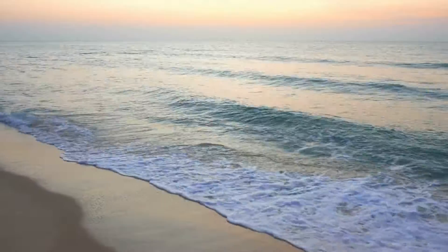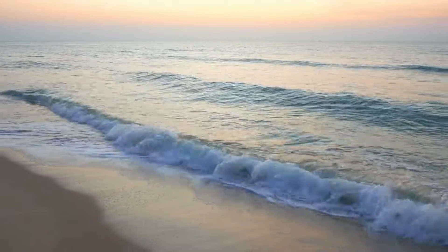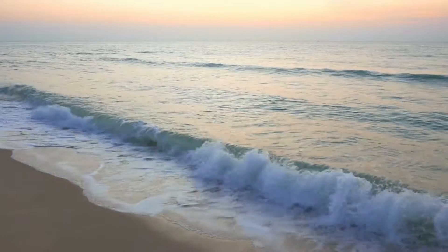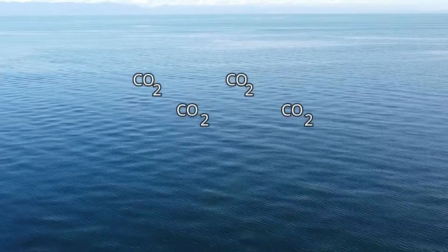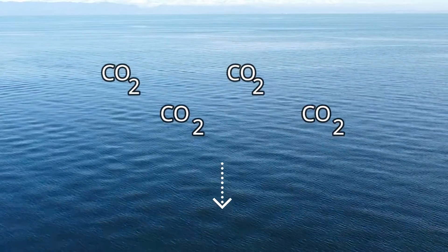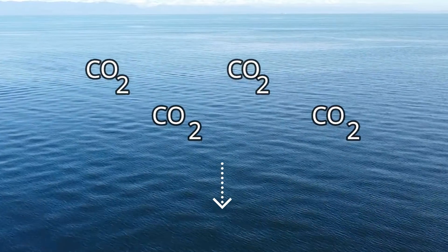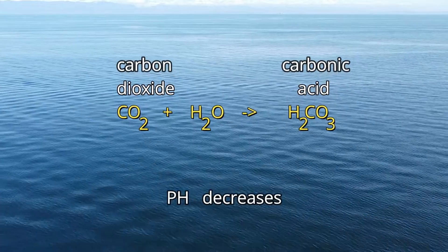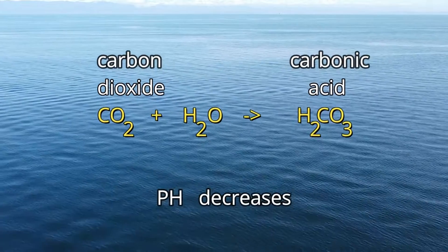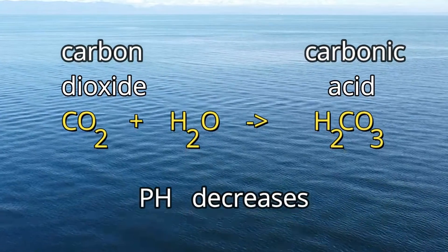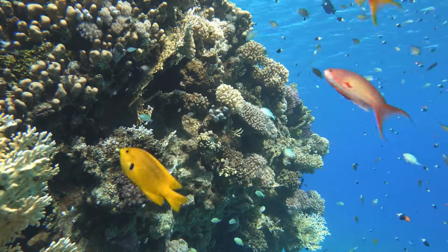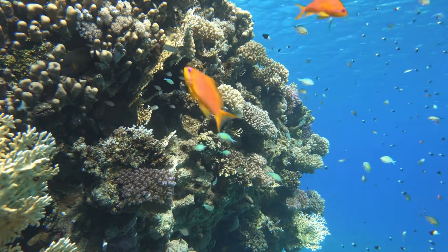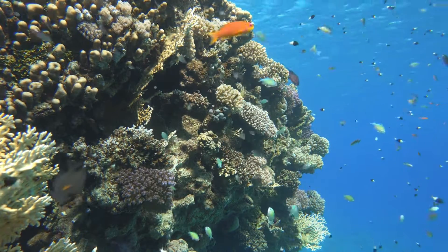Ocean acidification is also a threat to coral reefs. This acidification is caused by an increase in carbon dioxide in the atmosphere, followed by an increase in its concentration in seawater. In seawater, it reacts forming carbonic acid, causing a decrease in the pH of the water in the oceans. This decrease in pH impairs the formation of reefs due to the reduction of limestone secretion by corals and algae.